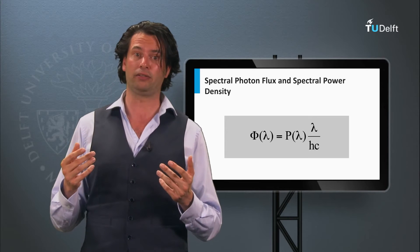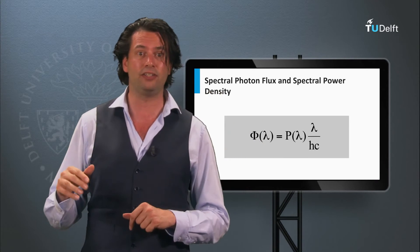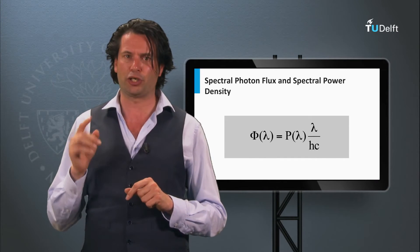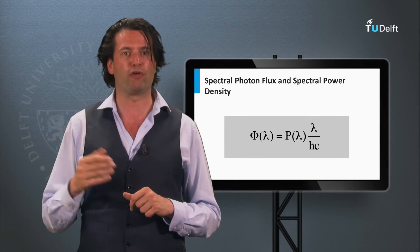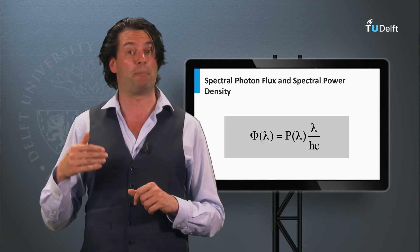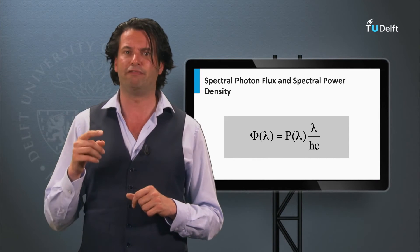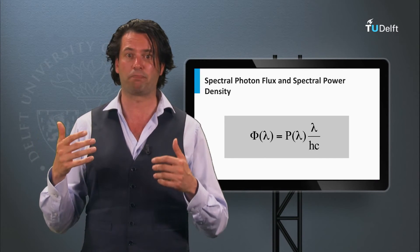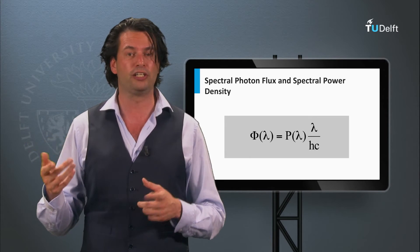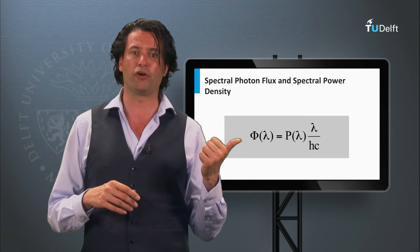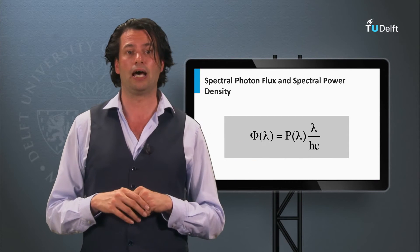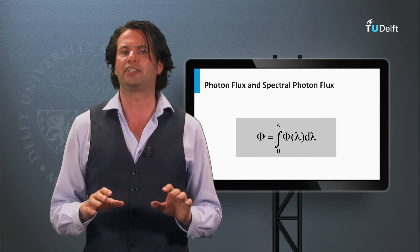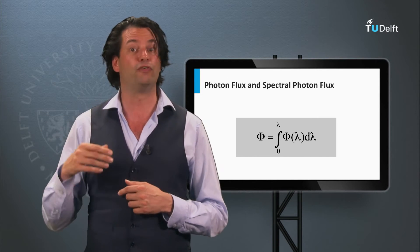The relation between the spectral power density and the spectral photon flux requires only the energy of a photon. The spectral photon flux at wavelength lambda is the spectral power density at wavelength lambda divided by the energy of a photon with wavelength lambda. The photon energy is determined by the product of Planck's constant and the light velocity divided by the wavelength. Integrating the spectral photon flux over lambda gives the photon flux.